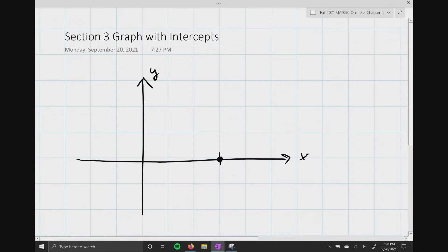This is the point 3 comma 0, and this is going to be the point 0 comma 2. Connect the dots. All right, so that's about a straight line. I guess I can make it a little bit better. There we go.